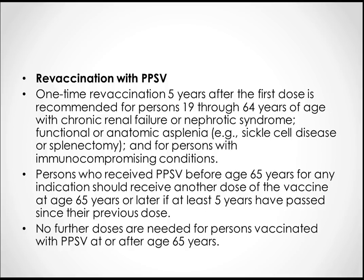For re-vaccination with PPSV: one-time re-vaccination five years after the first dose is recommended for persons aged 19 to 64 years with chronic renal failure, nephrotic syndrome, functional or anatomic asplenia, or immunocompromising conditions. Note that influenza re-vaccination is every one year, whereas pneumococcal is five years. Persons who received PPSV before age 65 for any indication should receive another dose at age 65 or later, if at least five years have passed since the previous dose. No further doses are needed for persons vaccinated at or after age 65.